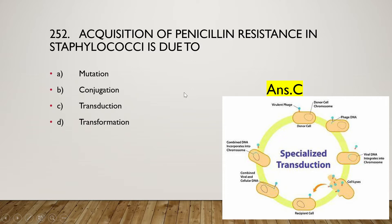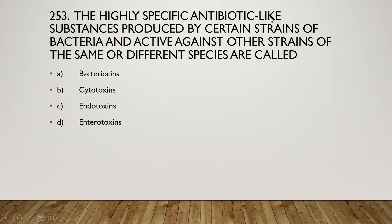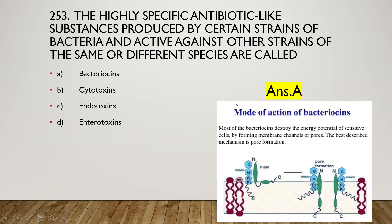The next question: highly specific antibiotic-like substances produced by certain strains of bacteria and active against other strains of the same or different species are called bacteriocins, cytotoxins, endotoxins, or enterotoxins? The right answer is option A, bacteriocins. Most bacteriocins destroy the energy potential of sensitive cells by forming membrane channels or pores, causing cell death.